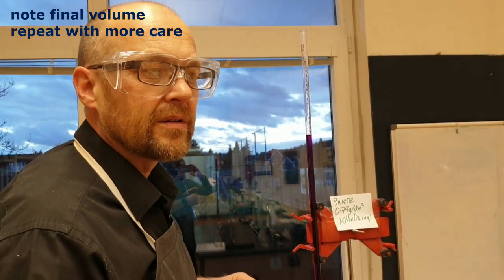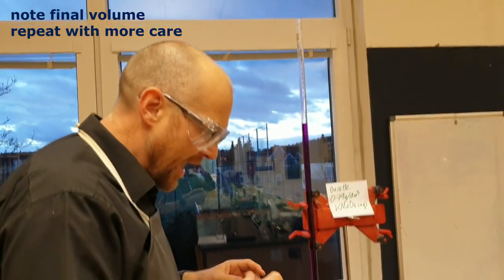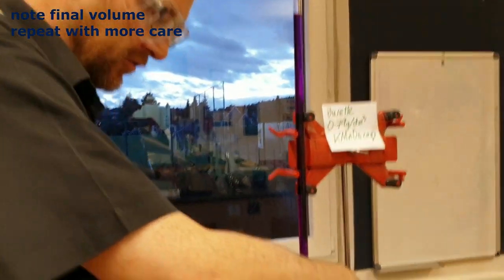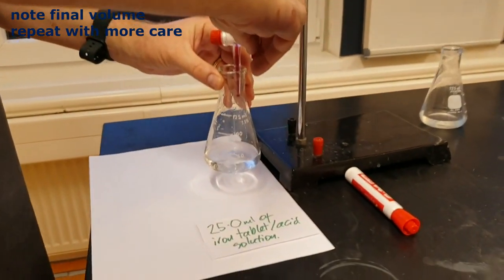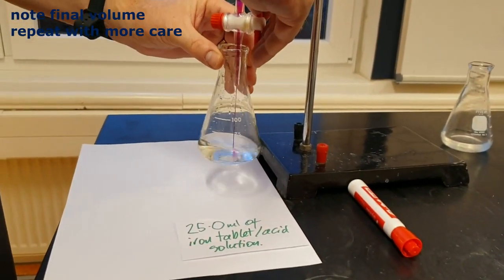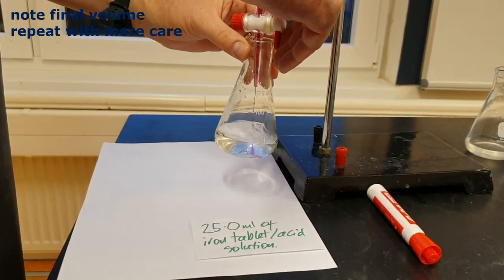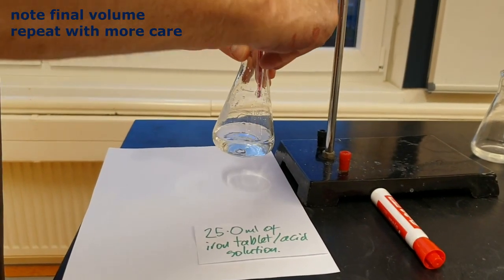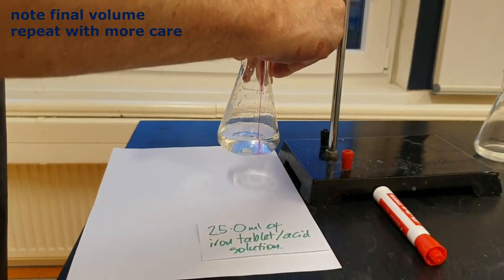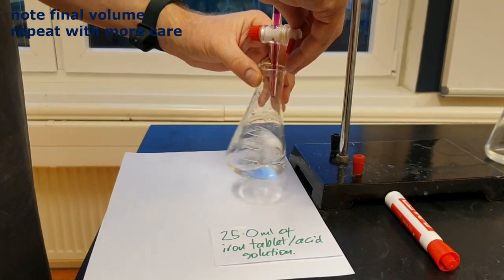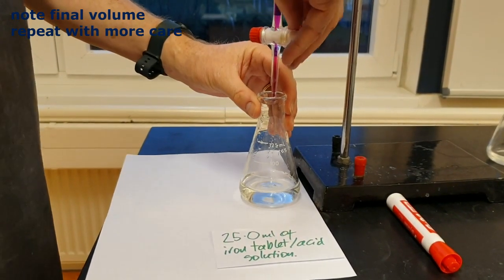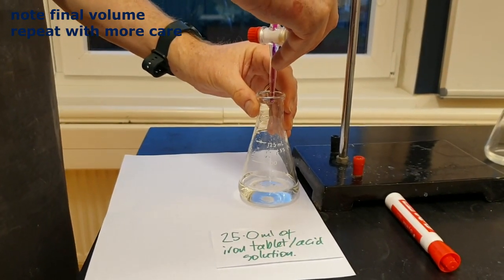Okay, second titration. Well, I think I want to stop at about after I've added 10 this time. And then do it much slower. So let's add 10. So that's 10 added. And now I'm going to add drop wise. I should be able to catch it on just one drop.